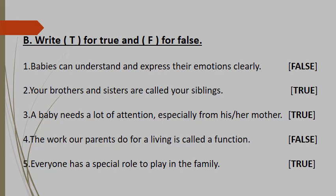Question B: Write T for true and F for false. Number one: Babies can understand and express their emotions clearly. That is not correct because babies are very small and they cannot talk — so the answer is false. Number two: Your brothers and sisters are called your siblings. Yes, that is true. Number three: A baby needs a lot of attention, especially from his or her mother. Yes, that is true.